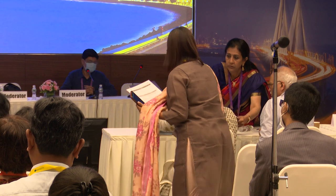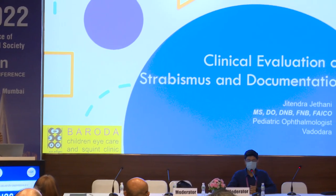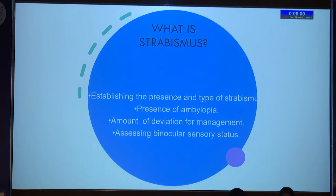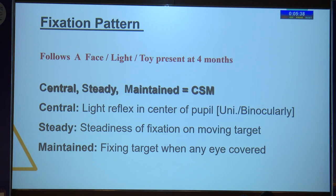We'll go on to Dr. Jitinder Jithani, who will be talking on clinical evaluation of strabismus and documentation. Just a quick word on the previous topic: we should also document keratometry because we should be sure that it is axial myopia and not keratoconus myopia. If there is isophoria, giving progressive lenses would help. Coming back to the topic: the workup of strabismus involves establishing the presence and type of strabismus, whether there is any amblyopia, the amount of deviation for management, and assessing the binocular status of the patient — which is very important in kids.